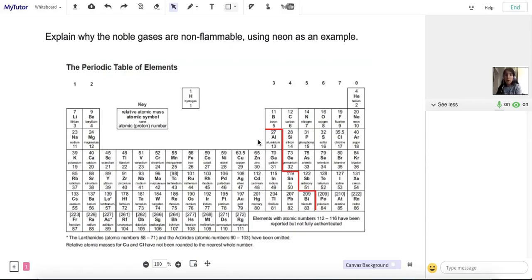Explain why the noble gases are non-flammable using neon as an example. So first of all, what does non-flammable mean? It means that something is not able to catch on fire or is not combustible.